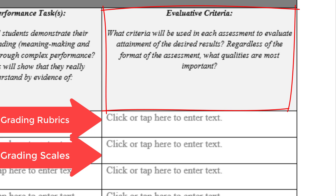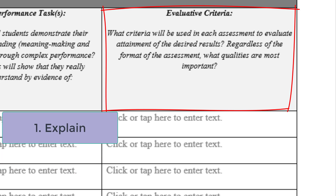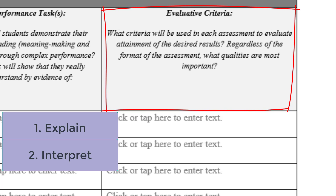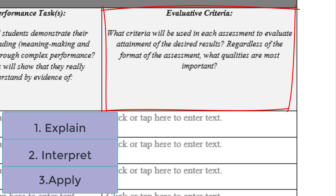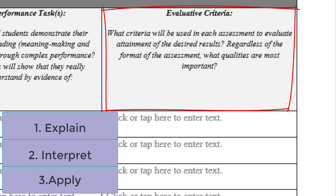When creating our evaluative criteria, we want to make sure we're using different facets of understanding with our students, depending on what type of assignments they're going to be doing. We might want students to explain knowledge and information, where they draw inferences or express something in their own words. We may want students to interpret information — maybe they take data and turn it into something they can present, or teach other students about it. We want students to be able to apply the information they learned and use the skills they've acquired in possibly a real world situation. We also want to see how students can show their perspective — can they see the big picture, are they aware of different points of view, and are they able to avoid showing bias toward the content?